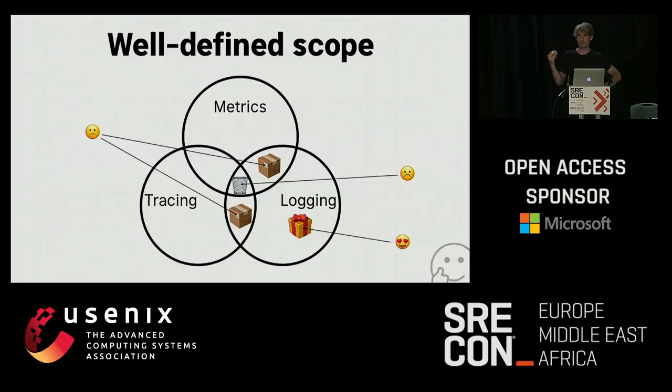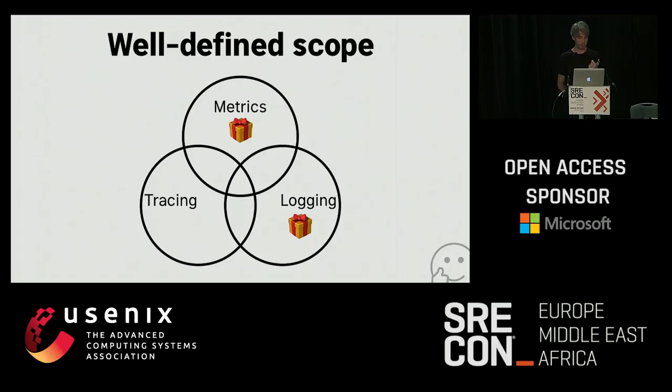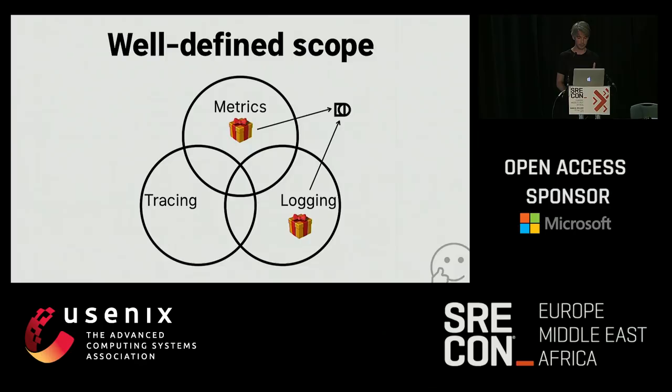If we have individual well-scoped products, they tend to lend themselves to the idea of composition. An observability system composed of well-defined and independent metrics and logging systems, by sitting on top of them, can leverage the strengths of each without compromise — without the compromise inherent in trying to do the work of both. This relies on a well-defined problem domain, like this Venn diagram.